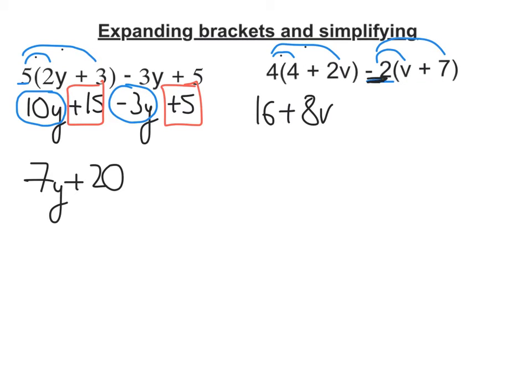Remember, it's negative 2 I'm going to multiply it by. Negative 2 times v is negative 2v, because signs are different. I've got a negative and a positive. The other one, we've got negative 2 multiplied by positive 7. Signs are different, so it's a negative 14.